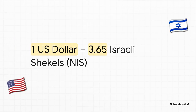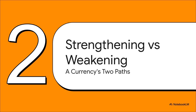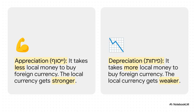For example, if you see that one US dollar equals 3.65 Israeli shekels, that number is just giving you a snapshot — a direct comparison of their values right at that particular moment in time. That number is almost never the same for long; it's always moving, shifting in one of two basic directions. When your local money gets stronger, we call that appreciation — you need less of your cash to buy that foreign currency. When it gets weaker, that's called depreciation, and now you need more of your money for the same amount.